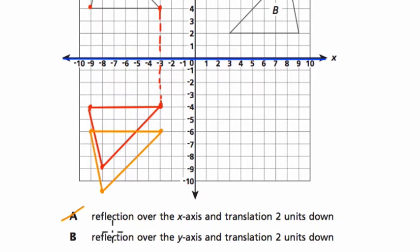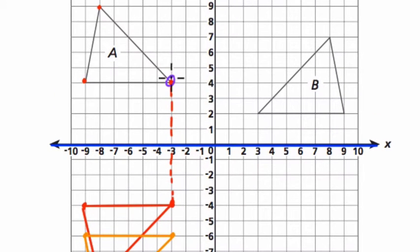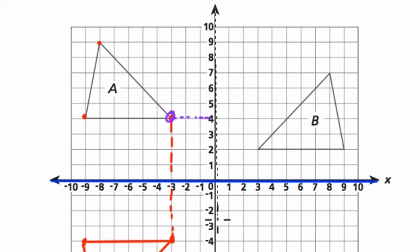If I go to my next option, they say it's a reflection over the y-axis and then a translation two units down. So first of all, again, take your vertex, your point right here, and now I'm going to go three units toward the axis, the y-axis. Let me highlight the y-axis. That's this right here.